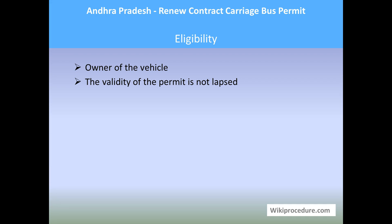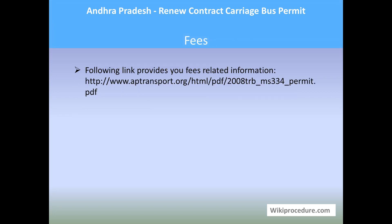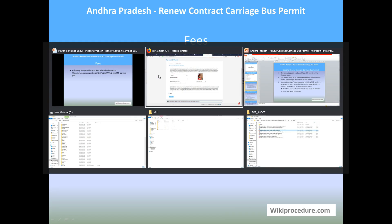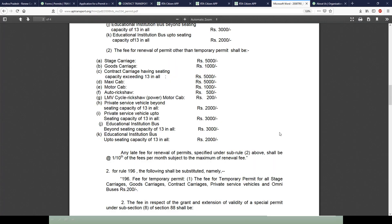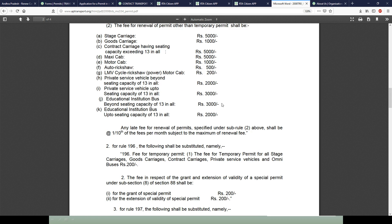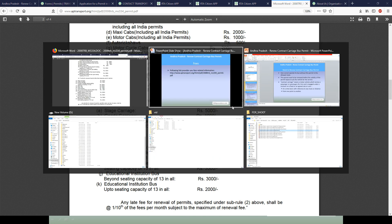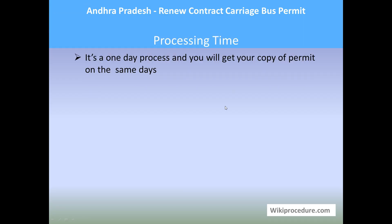Eligibility: the owner of the vehicle is eligible for this procedure, provided the validity of the permit has not elapsed. Validity: the permit is usually valid for five years. The renewal of the permit can be obtained along with the vehicle fitness certificate, and the age of the vehicle also limits the validity. Fees: the link provided below will help you reach a page listing the services and fees involved — note the applicable fee and be prepared with the correct amount. Processing time: it is a one-day process and you will receive your renewed permit copy on the same day.